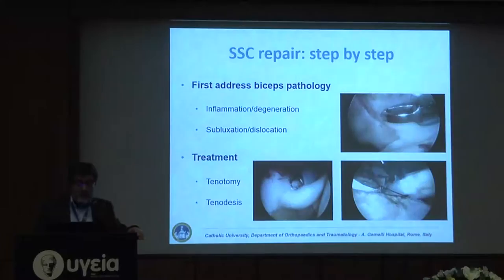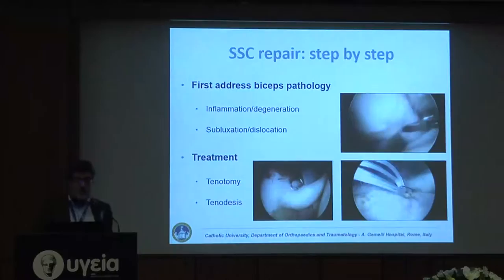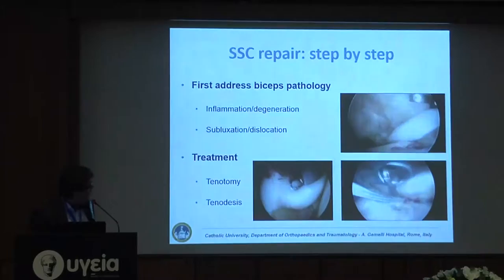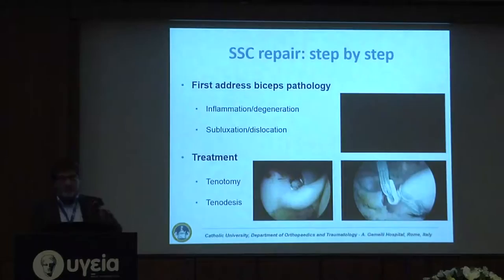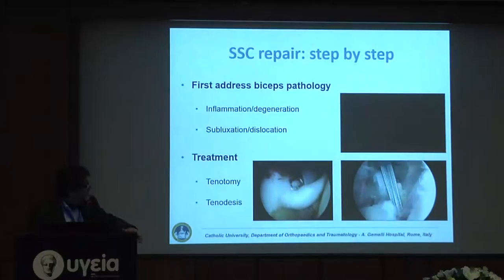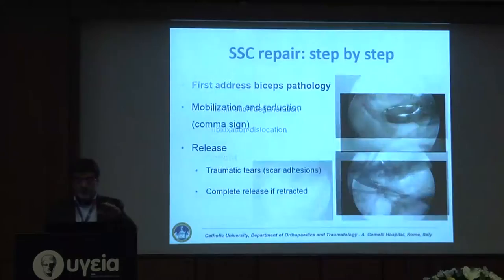You must first address the biceps pathology when it is combined with the subscapularis tear, in case of inflammation or degenerative changes of the tendon, or in case of subluxation, dislocation, or instability. The treatment can be tenotomy or tenodesis. I perform a tenodesis on the upper part of the bicipital groove using suture anchors with the lasso-loop technique.